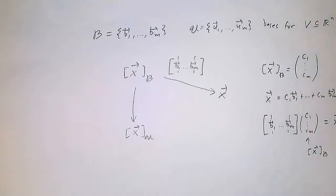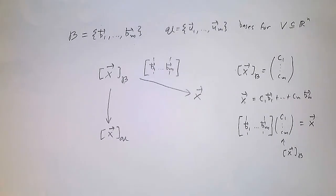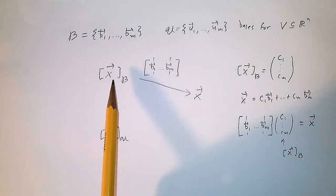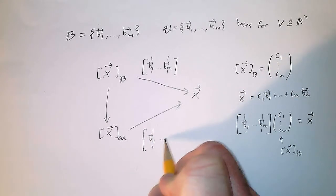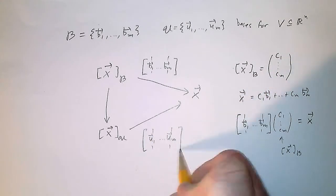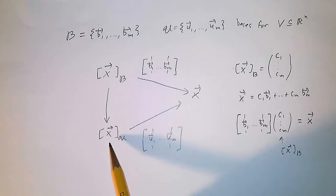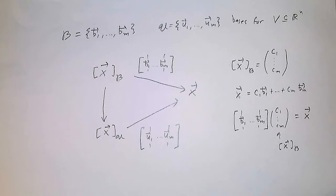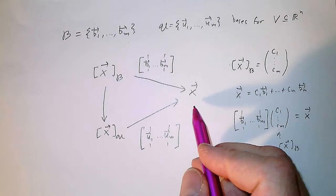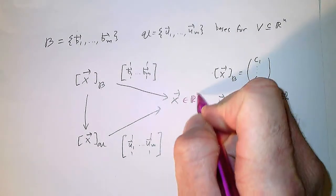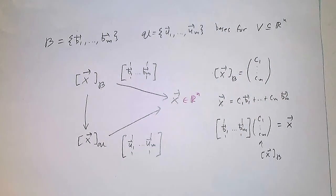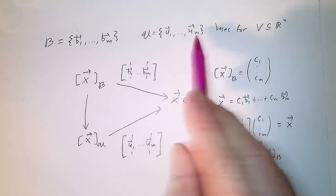That also works with basis U: I take the U vectors, align them in a matrix, and I have the right matrix to multiply the coordinate vector of X with respect to U to get X back in Rⁿ. Let's pause to think about the size of everything here. This X vector is in Rⁿ, but V doesn't necessarily have dimension N — it might have dimension M, which could be smaller.